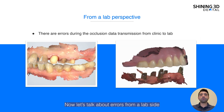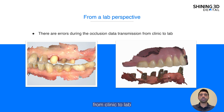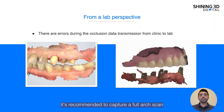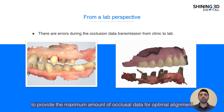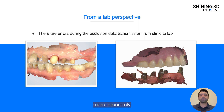Now, let's talk about the errors from the lab side. There are common errors during the occlusion data transmission from clinic to lab. For cases with over two units — orthodontic treatment, full mouth reconstruction, or final restorations — the occlusion is not always stable. It is recommended to capture a full arch scan to provide the maximum amount of occlusal data for optimal alignment. If possible, a wax rim bite can also be provided to the lab to assist the dental technician in determining the patient's occlusion more accurately.